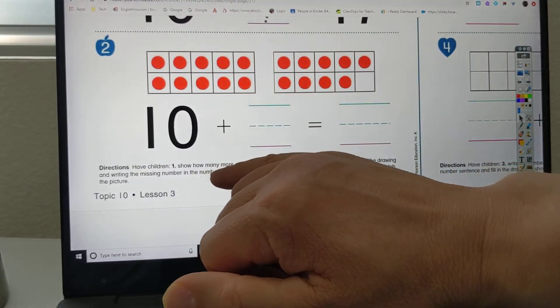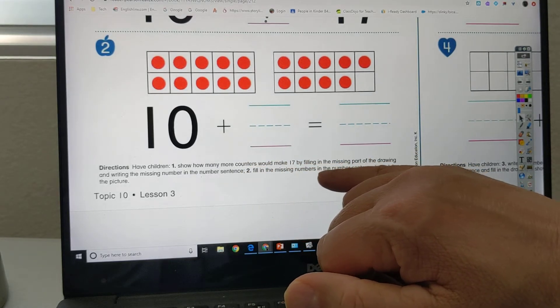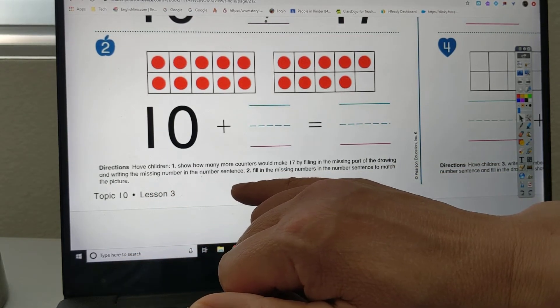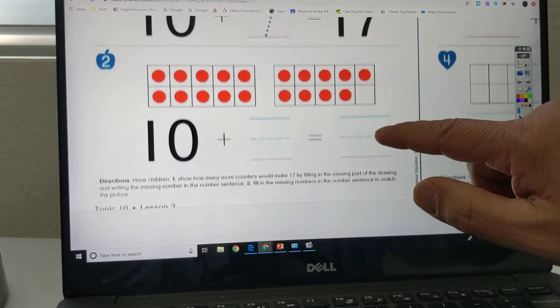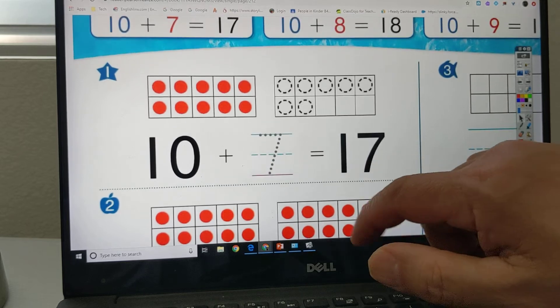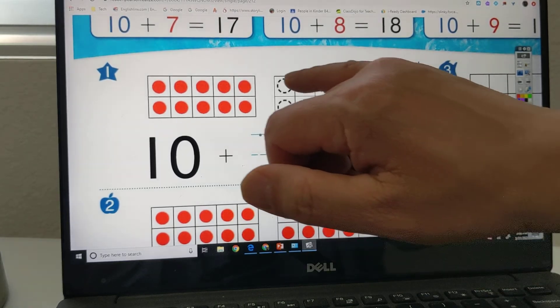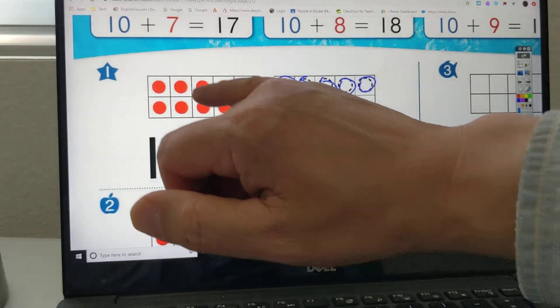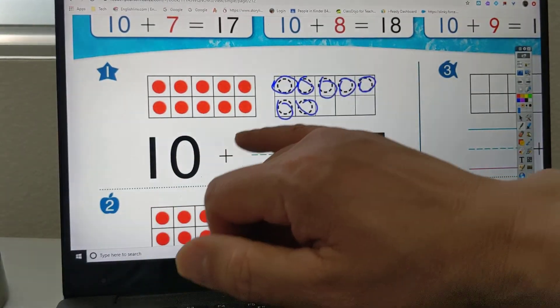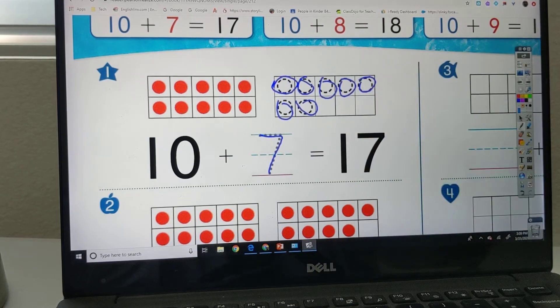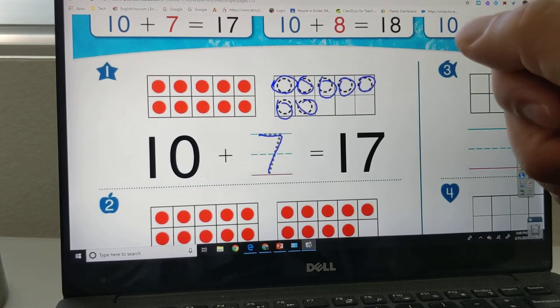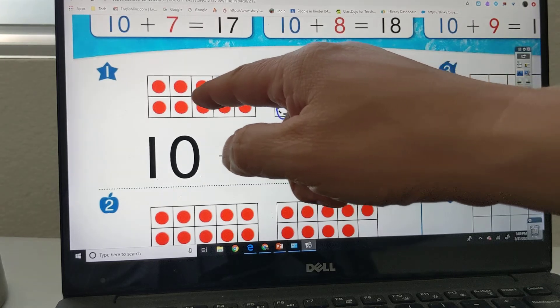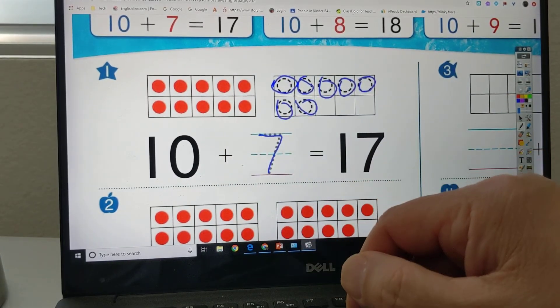Have children show how many more counters would make 17 by filling in the missing part of the drawing and writing the missing number in the number sentence. All right. It's just a matter of tracing. Anyone can do this. 1, 2, 3, 4, 5, 6, 7. So there's 10 here plus 7. 10 plus 7 is equal to 17. So all you need to do is just transfer this into your writing journal. You put 1 and then you put 10 plus 7 is equal to 17.